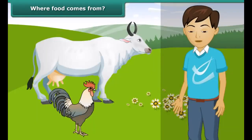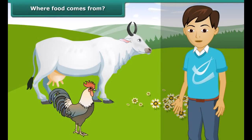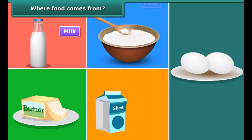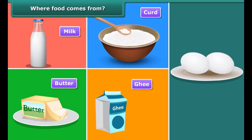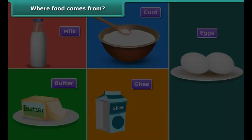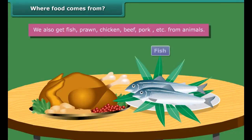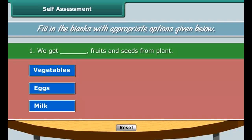Some of the food we also get from animals — like milk, curd, butter, ghee, eggs, etc. We also get fish, prawn, chicken, beef, pork, etc. from animals.